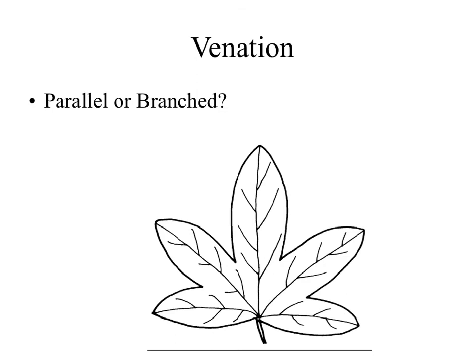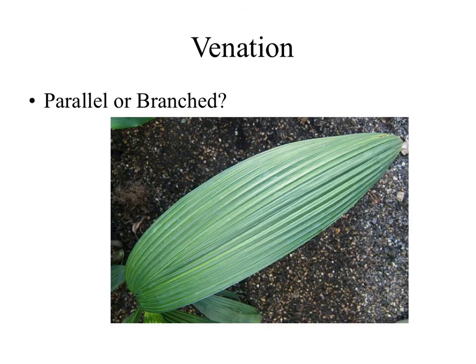How about this one? Branched. How about this one? Parallel. The main thing with why it's parallel or branched is actually going to relate to whether it's a monocot or a dicot, and that's going to be where we're heading into next week. The vascular bundles — our xylem and our phloem, which transport water and sap or sugars in a plant — are going to be arranged in different ways. These are just further opportunities to classify organisms as monocot or dicot, branched or parallel, pinnate or palmate, simple or compound.